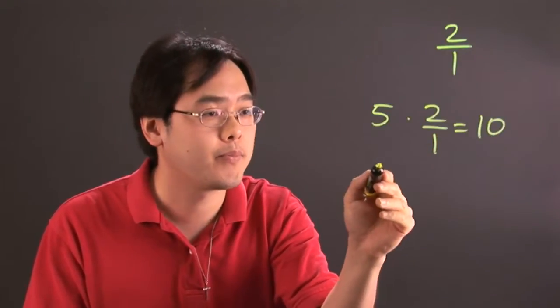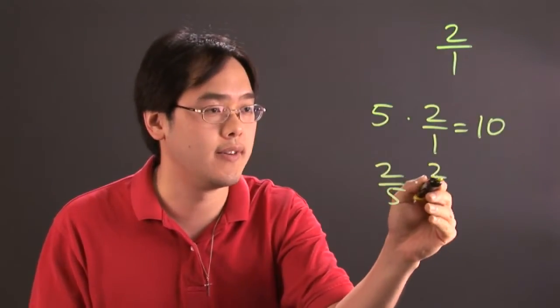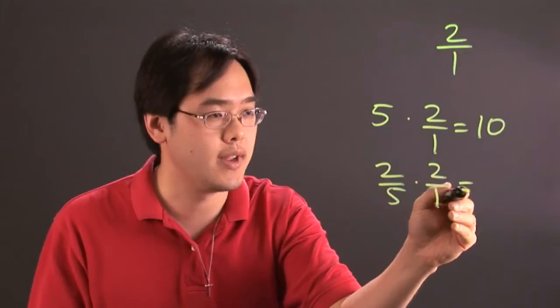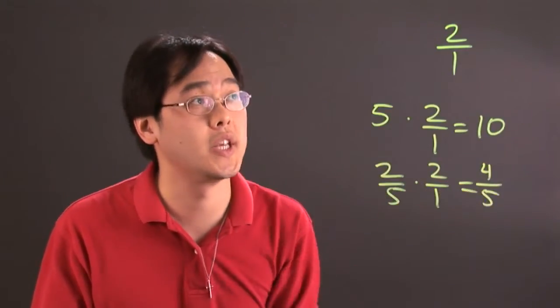Even if you have 2 fifths and you're multiplying by 2 to 1 ratio, you have 2 times 1. You're going to multiply across, 2 times 2 is 4, and 5 times 1 is going to give you 5.